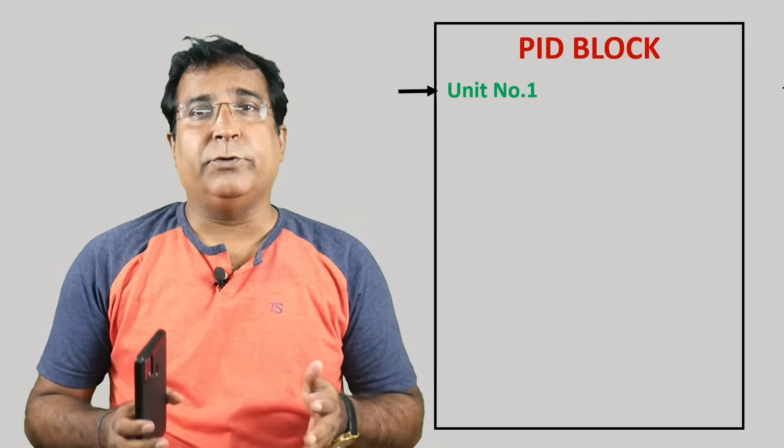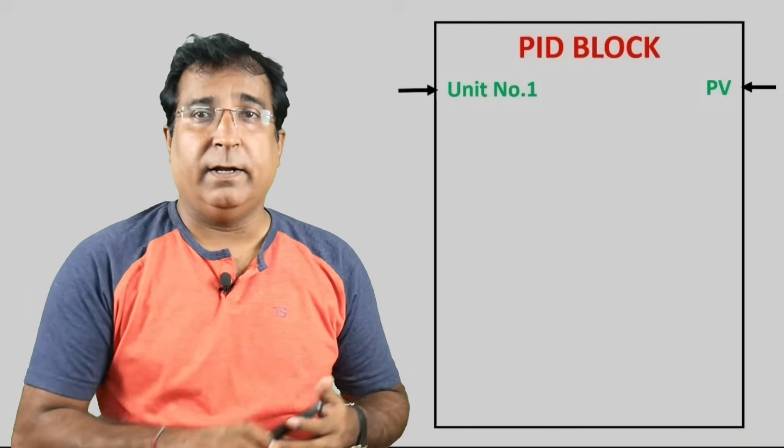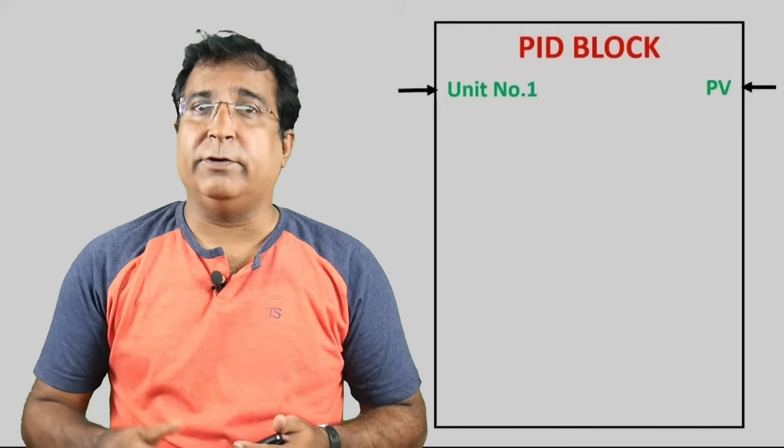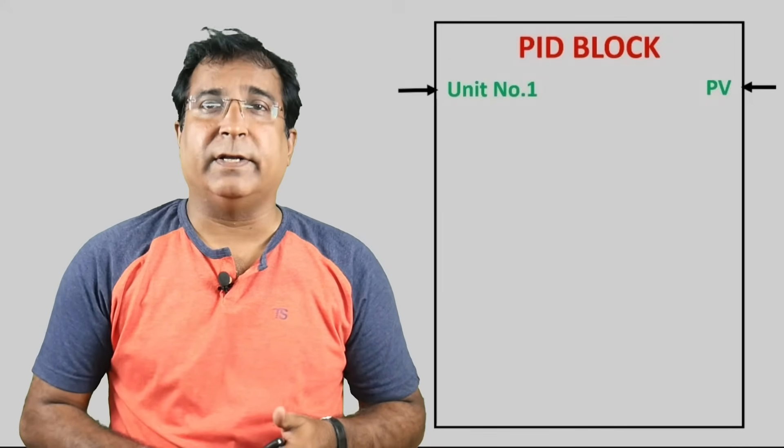For PID loop you need to have a process variable or measured variable to control, so it is connected here. It also allows direct IO address in many systems or scaled value in some systems when a process variable is not a field analog signal but a calculated variable.